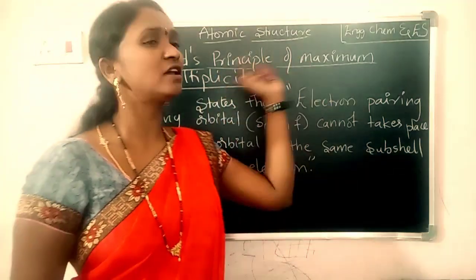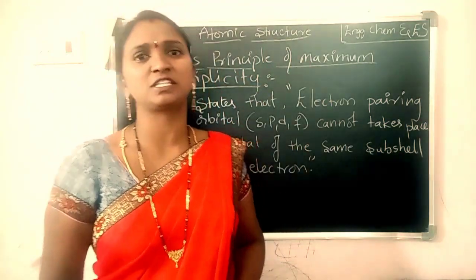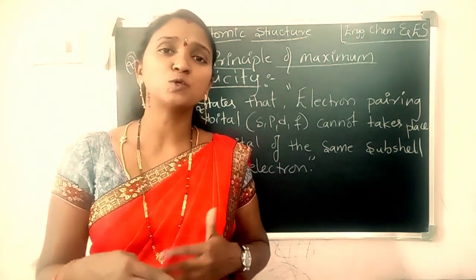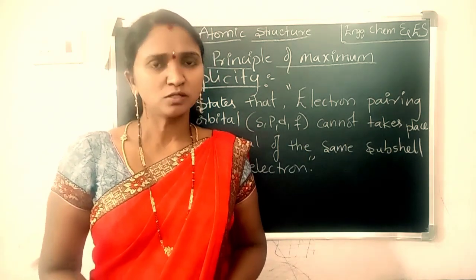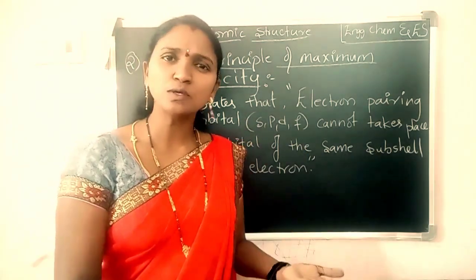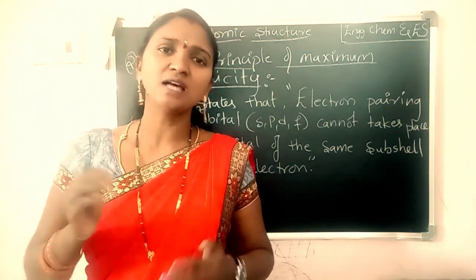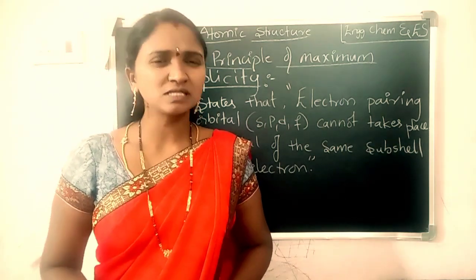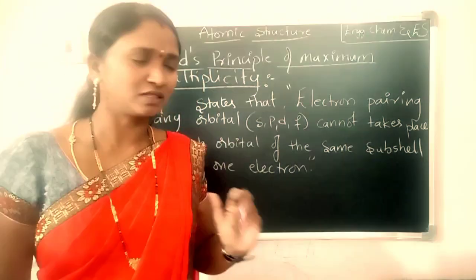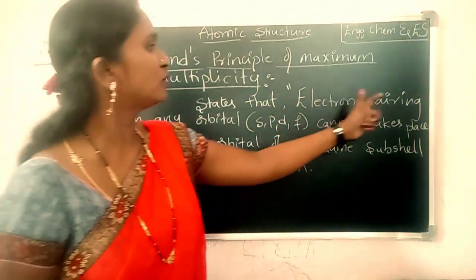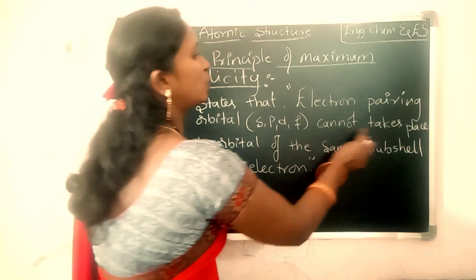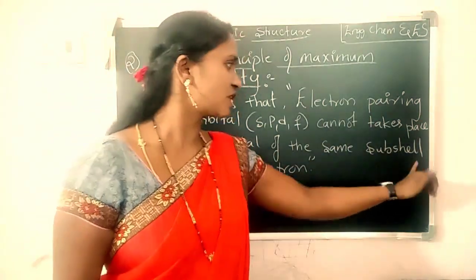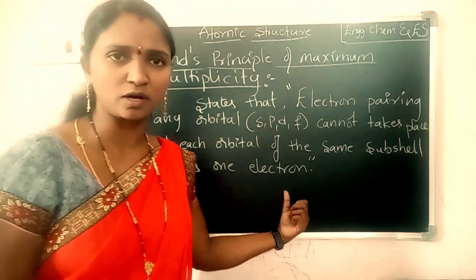Today our topic is Hund's rule of maximum multiplicity, or Hund's principle of maximum multiplicity. What is Hund's principle of maximum multiplicity? This principle explains about how the pairing of an electron takes place into subshells. This principle states that electron pairing in any orbital cannot take place until each orbital of the same subshell contains one electron.